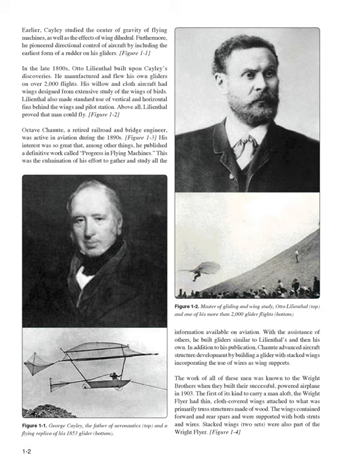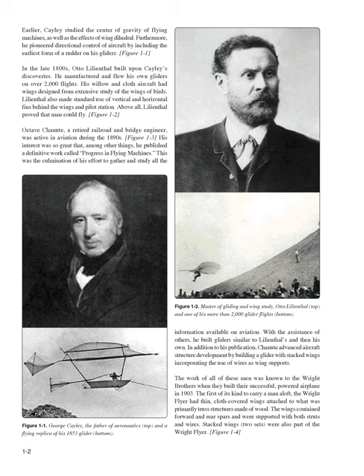Octave Chanute, a retired railroad and bridge engineer, was active in aviation during the 1890s. His interest was so great that, among other things, he published a definitive work called Progress in Flying Machines, the culmination of his effort to gather and study all the information available on aviation. With the assistance of others, he built gliders similar to Lilienthal's and then his own. Chanute advanced aircraft structure development by building a glider with stacked wings incorporating the use of wires as wing supports. The work of all of these men was known to the Wright brothers when they built their successful powered airplane in 1903.